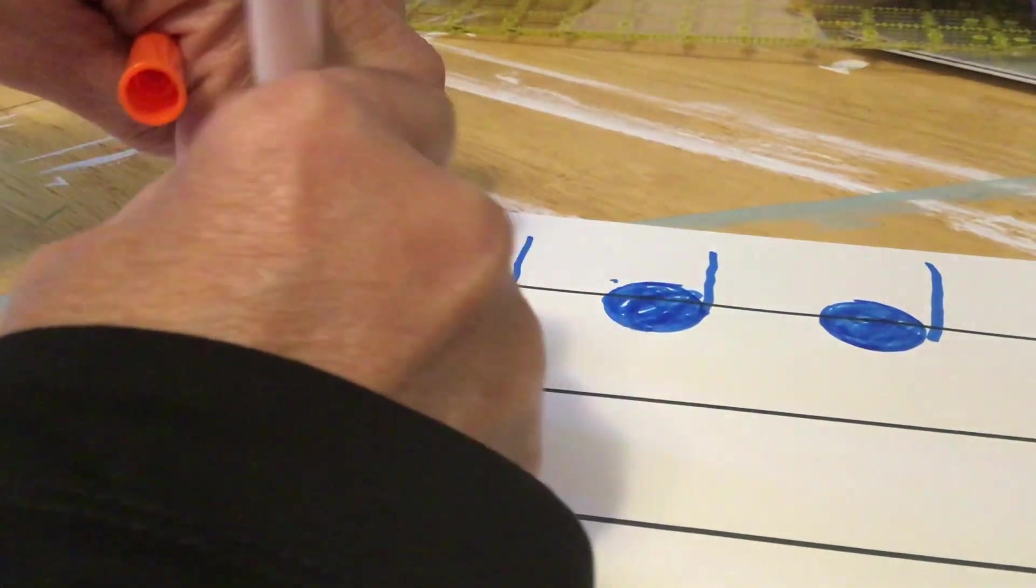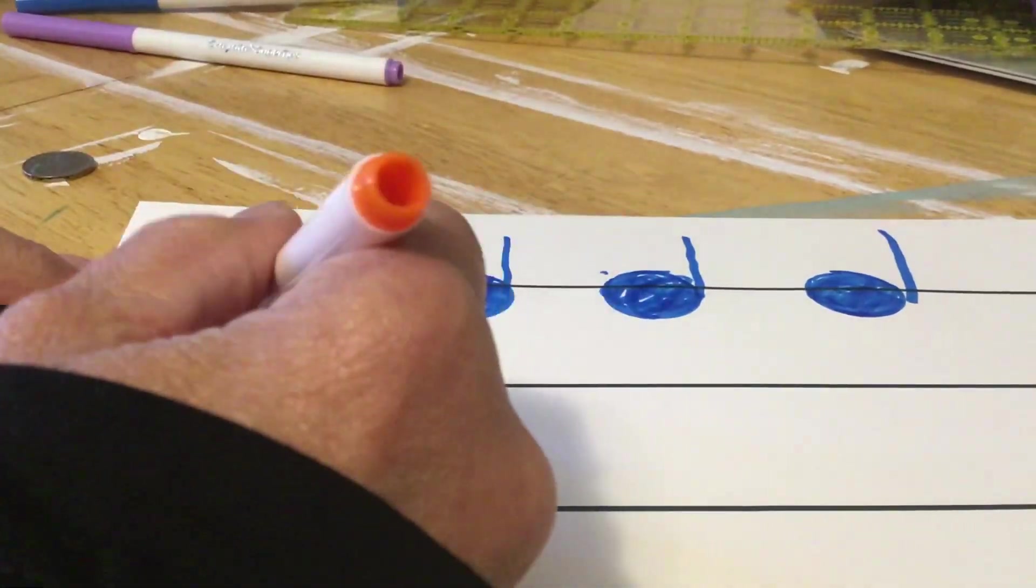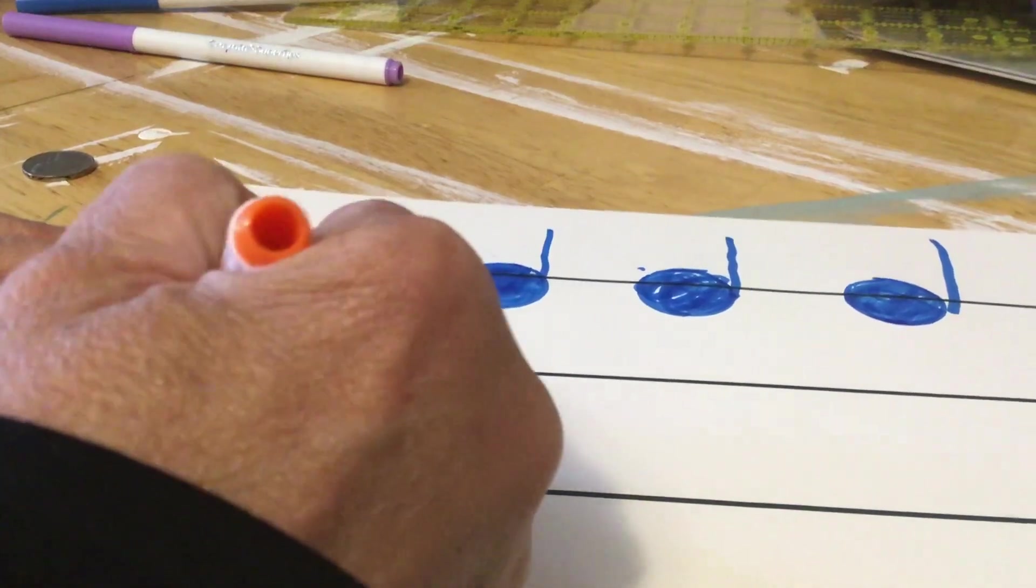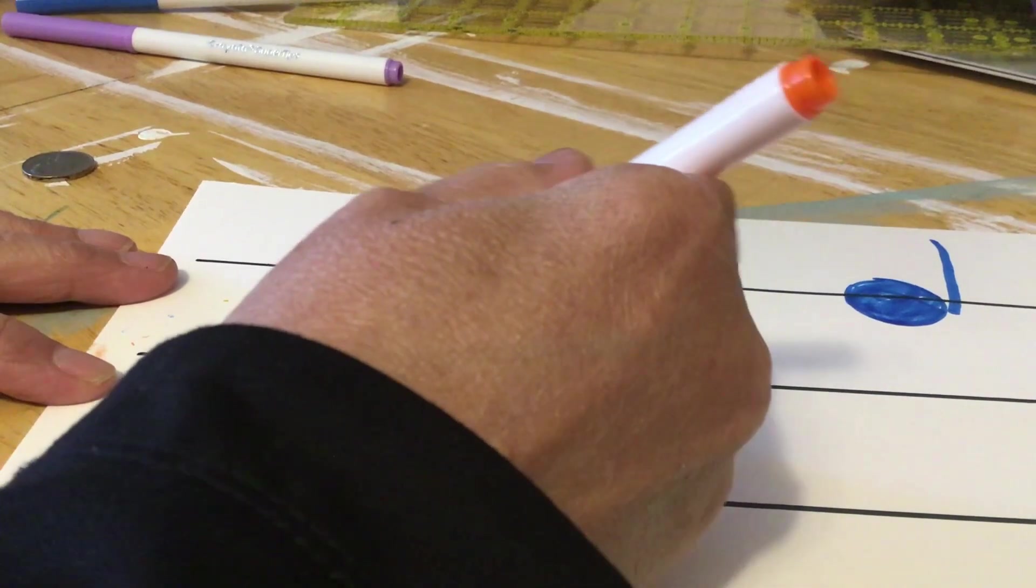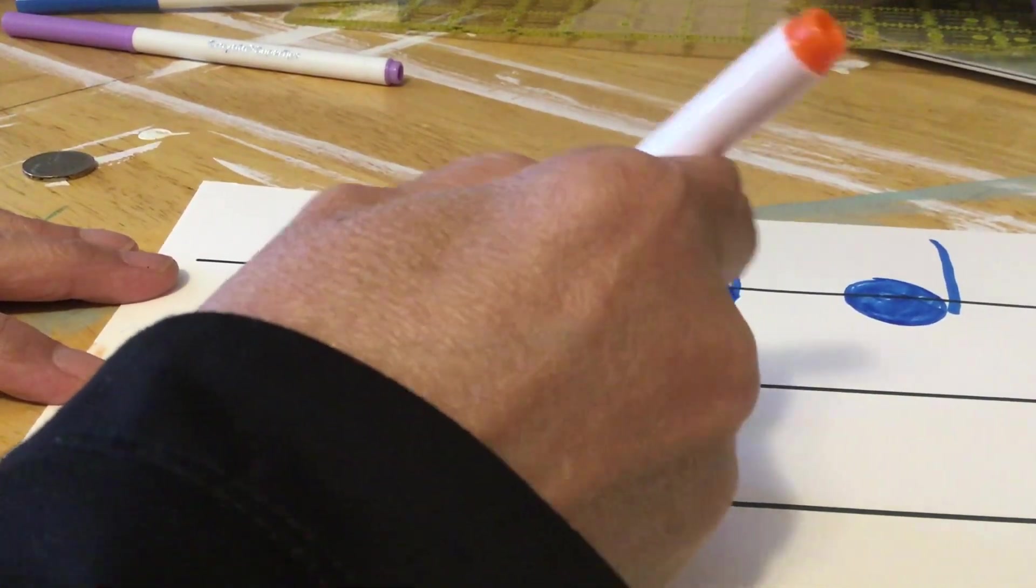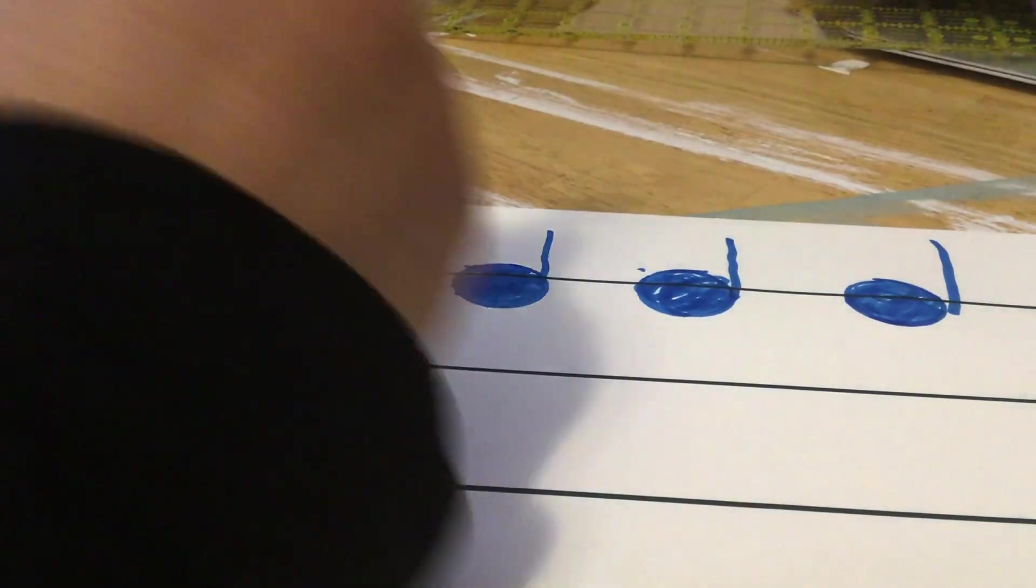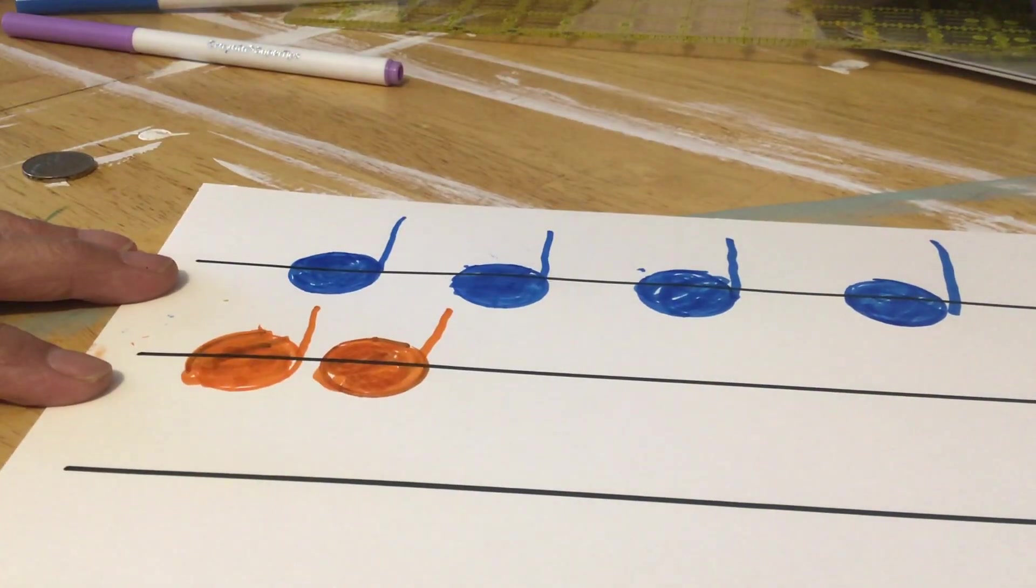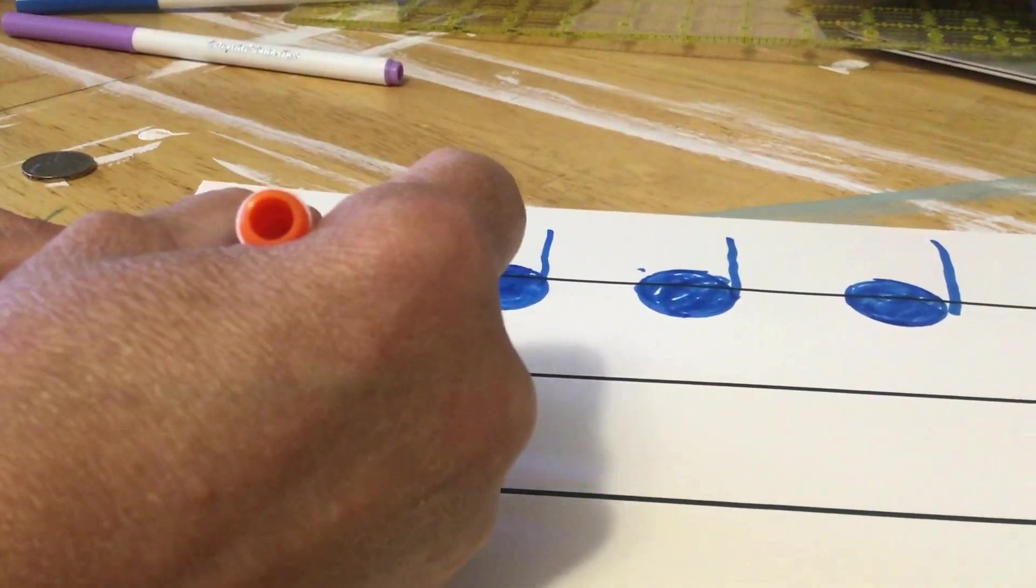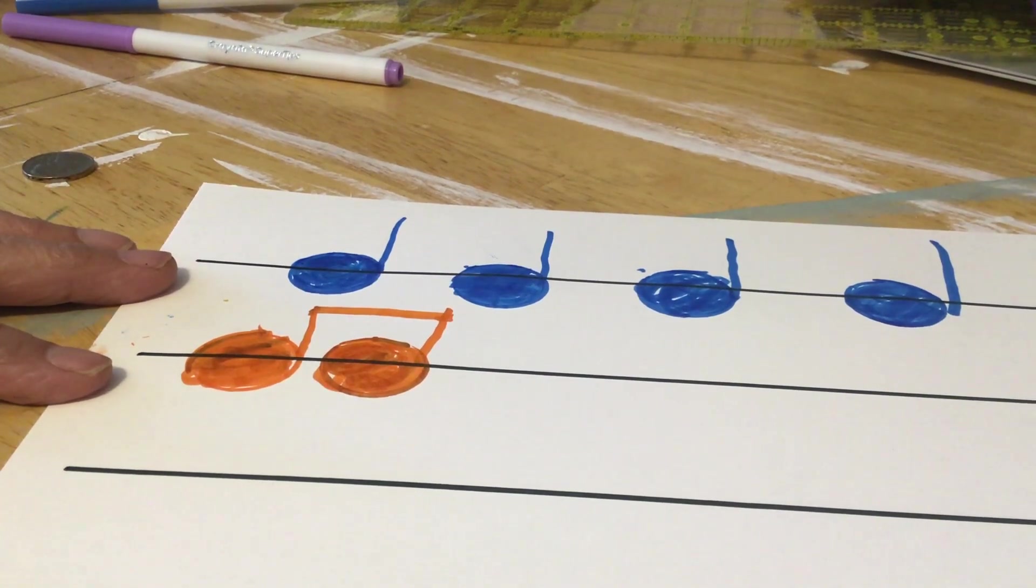And I'm going to draw them kind of close together so that I can put more on my line. Then I draw them just like a quarter note. Shade them in solid colors. Shade them in solid colors, and then when I put my stems on them, I'm going to draw a beam across the top to connect them. See that beam? Very important when you are drawing paired eighth notes, that you put that beam on there.